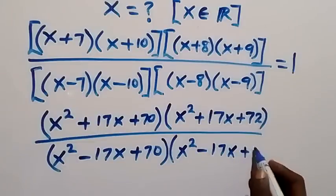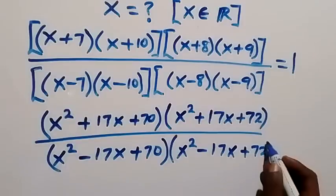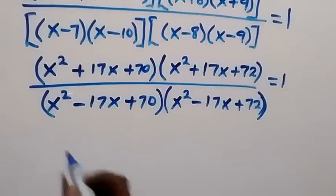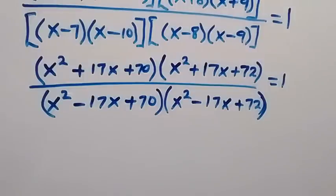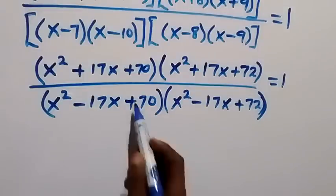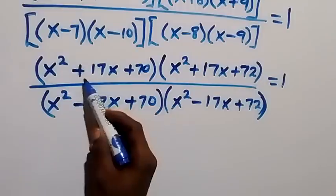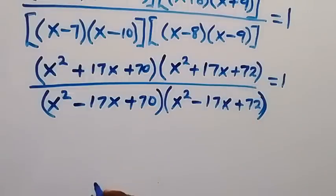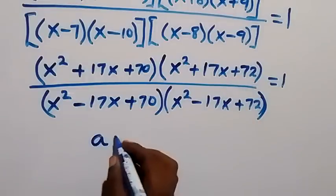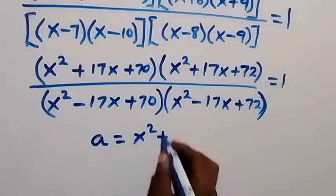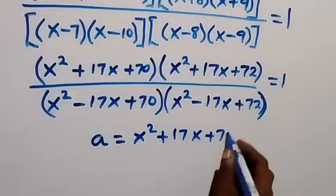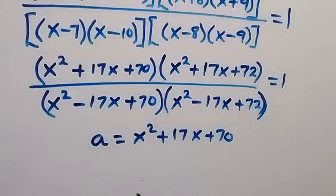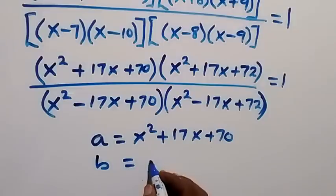This equals 1. In the next step we discover that x squared plus 17x plus 70 is common in the numerator terms — the only difference between them is 2. So let's let a equal x squared plus 17x plus 70. Looking at the denominator, it's similar except with minus 17x, so let b equal x squared minus 17x plus 70.